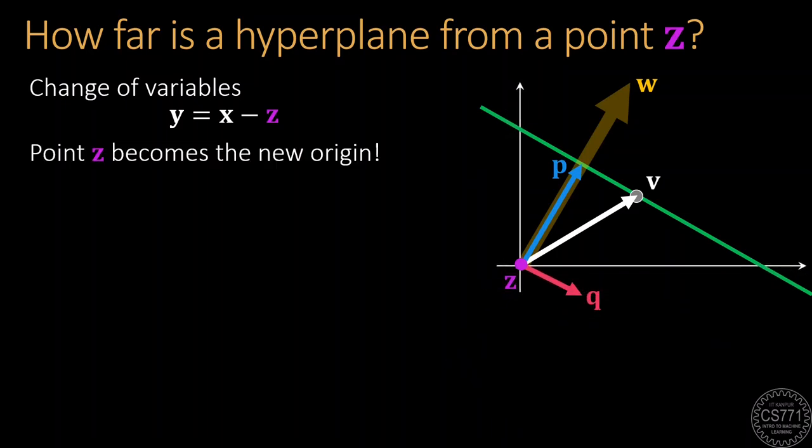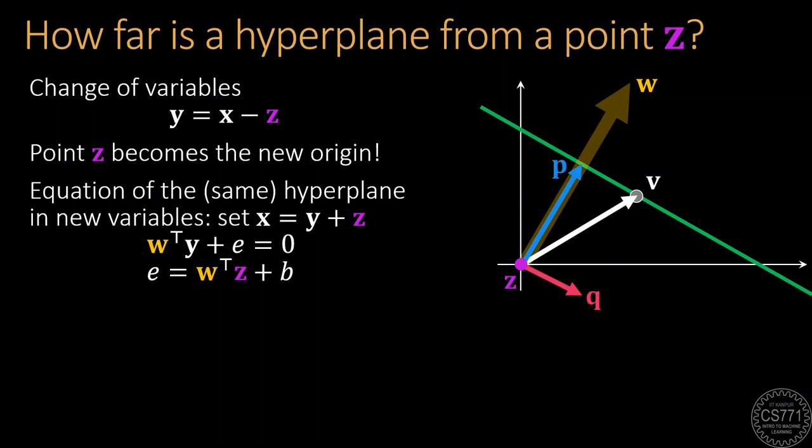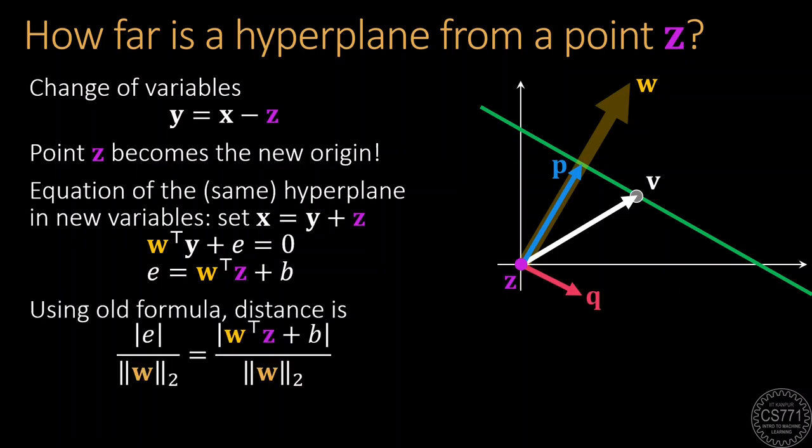Note that the equation of the hyperplane will also have to change to be in terms of these new variables. And the new equation of the hyperplane now has a bias term which turns out to be W transpose Z plus B. The old formula can then be applied and this gives us the distance of the point Z from the hyperplane.